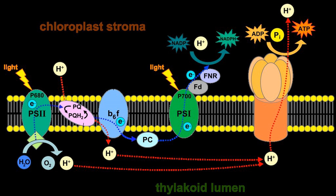Cyanobacteria are the only bacteria that produce oxygen during photosynthesis. Earth's primordial atmosphere was anoxic. Organisms like cyanobacteria produced our present-day oxygen-containing atmosphere. The other two major groups of photosynthetic bacteria — purple bacteria and green sulfur bacteria — contain only a single photosystem and do not produce oxygen.